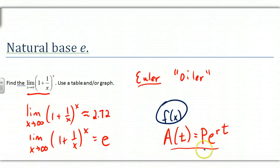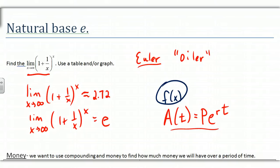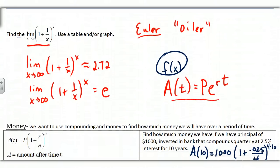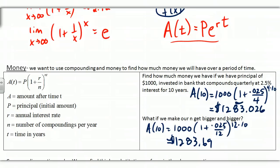You may have seen A(t) = Pe^(rt), the PERT formula. We'll go through that. Now let's talk about money. The compounding formula is A(t) — amount after time t. This is function notation like f(x), but written A(t); it is not A times t.